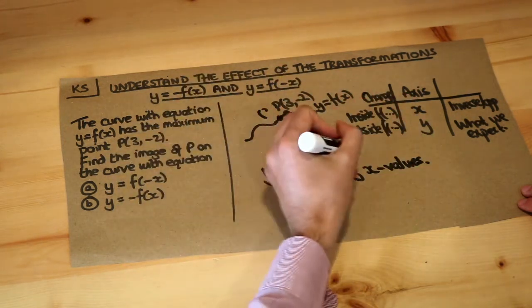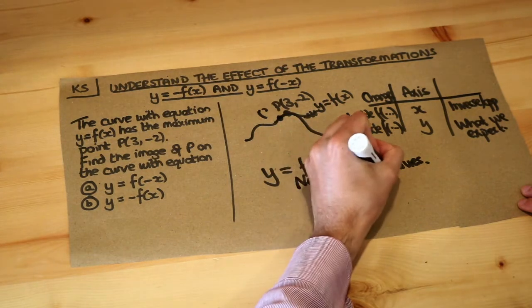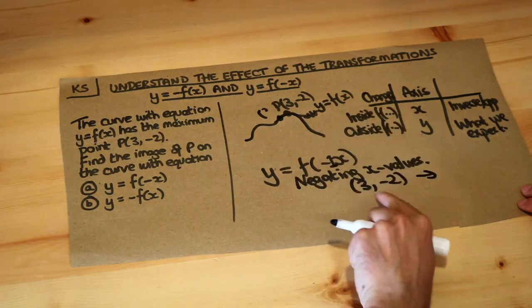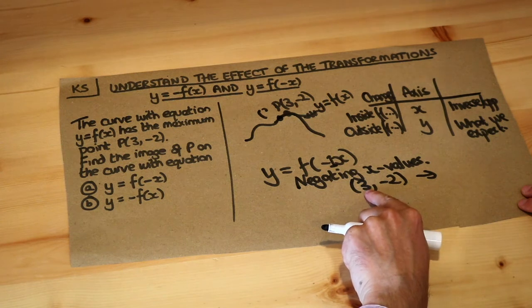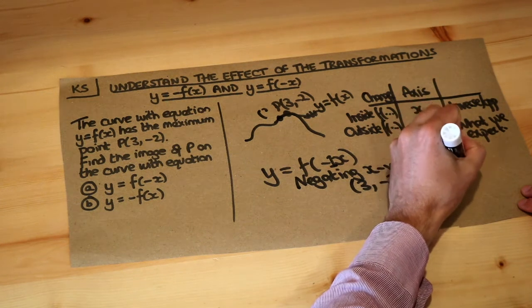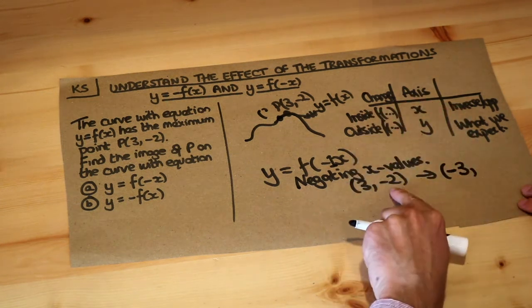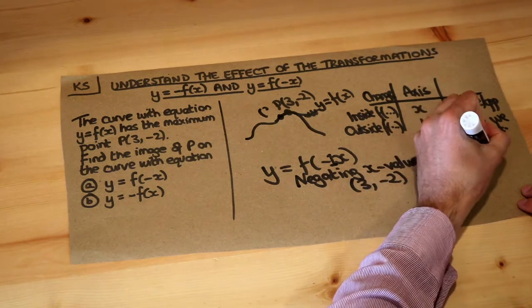So if we take the point (3, -2), if we negate the x value so times by minus 1, the 3 becomes minus 3, if it was negative it would become positive, and we're not doing anything to the y values so that stays as minus 2.